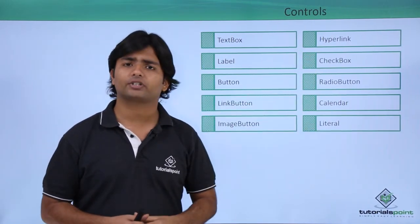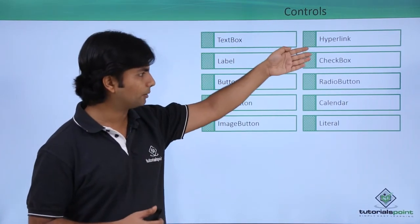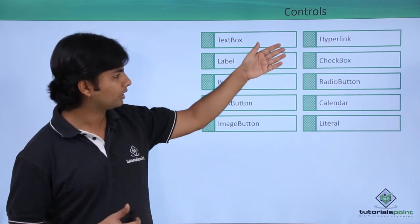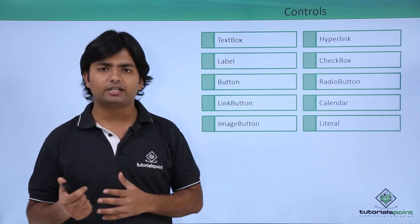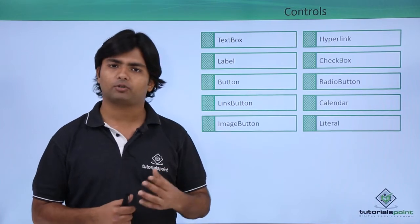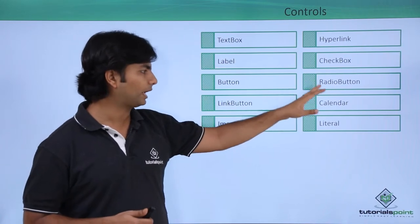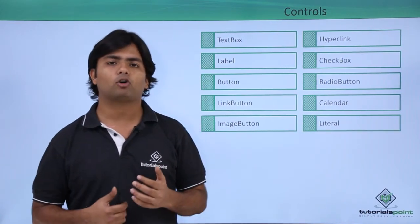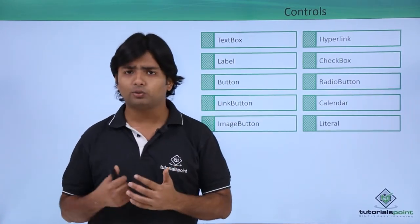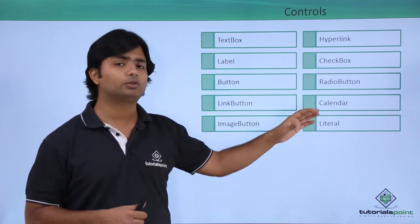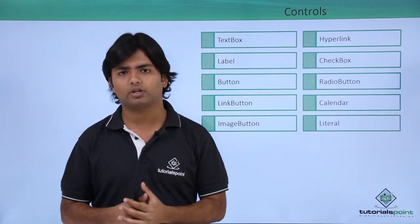CheckBox and RadioButton are used for choices. If you want the user to make multiple choices, you can use a CheckBox; for a single choice, use a RadioButton. Whenever a date-format value is required, the Calendar control can be used to perform date-related operations. Literal is somewhat similar to Label for setting text, but we'll primarily use Literal at runtime — we'll discuss the difference between Label and Literal during implementation.